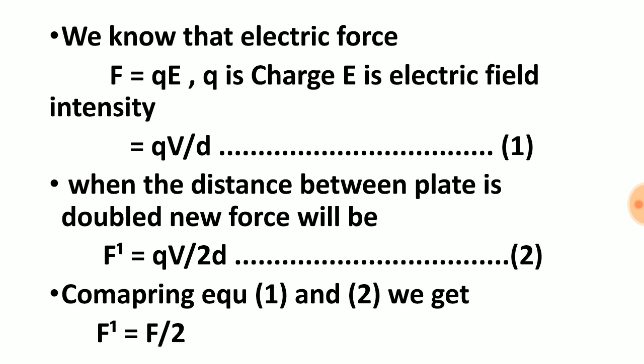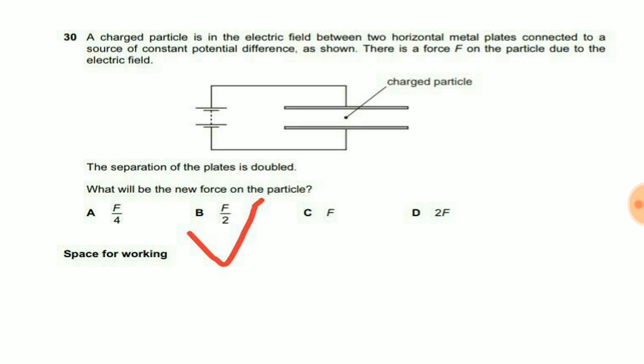Now comparing equations one and two, we'll get that F dash is equal to F by 2. Now force will be half of that of the original force. Option choice B contains that answer, so our option choice B is the right answer for this question.